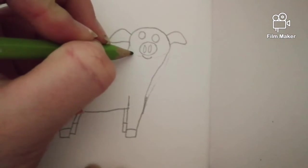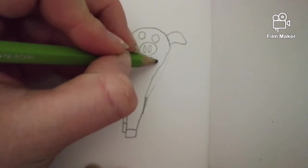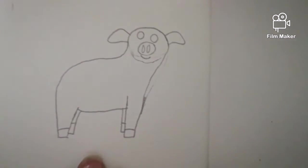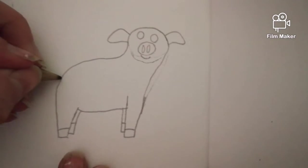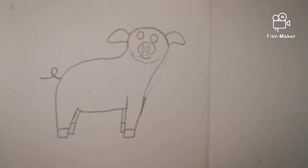Then you're going to just draw a little line for the chin, like that, and a tail. Now we're on to the coloring part.